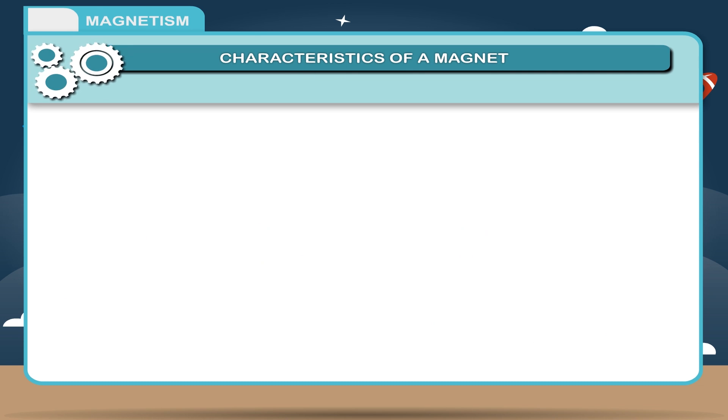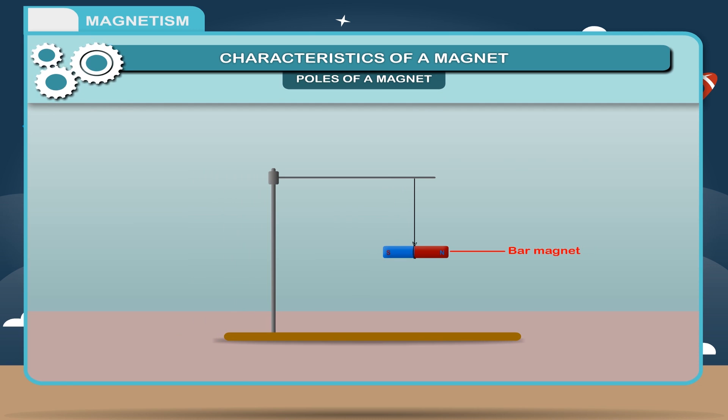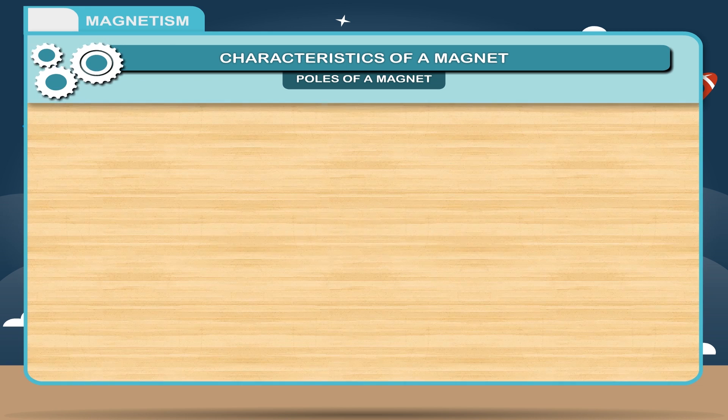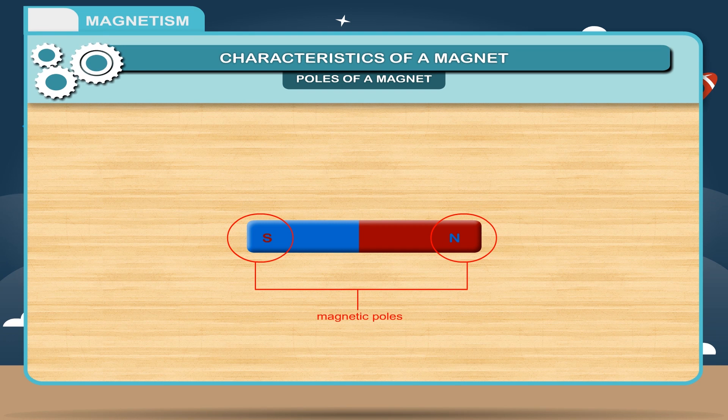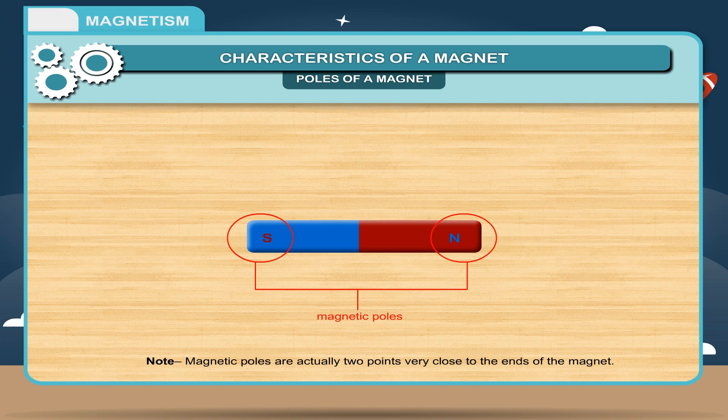Poles of a magnet: When a bar magnet is suspended freely with the help of a string, it always points towards north and south. When this magnet is disturbed slightly, it again comes to rest in north-south direction. The end pointing towards north is called north pole and the end pointing towards south is called south pole of the magnet. The two ends of a magnet where the force of attraction is maximum are called magnetic poles.